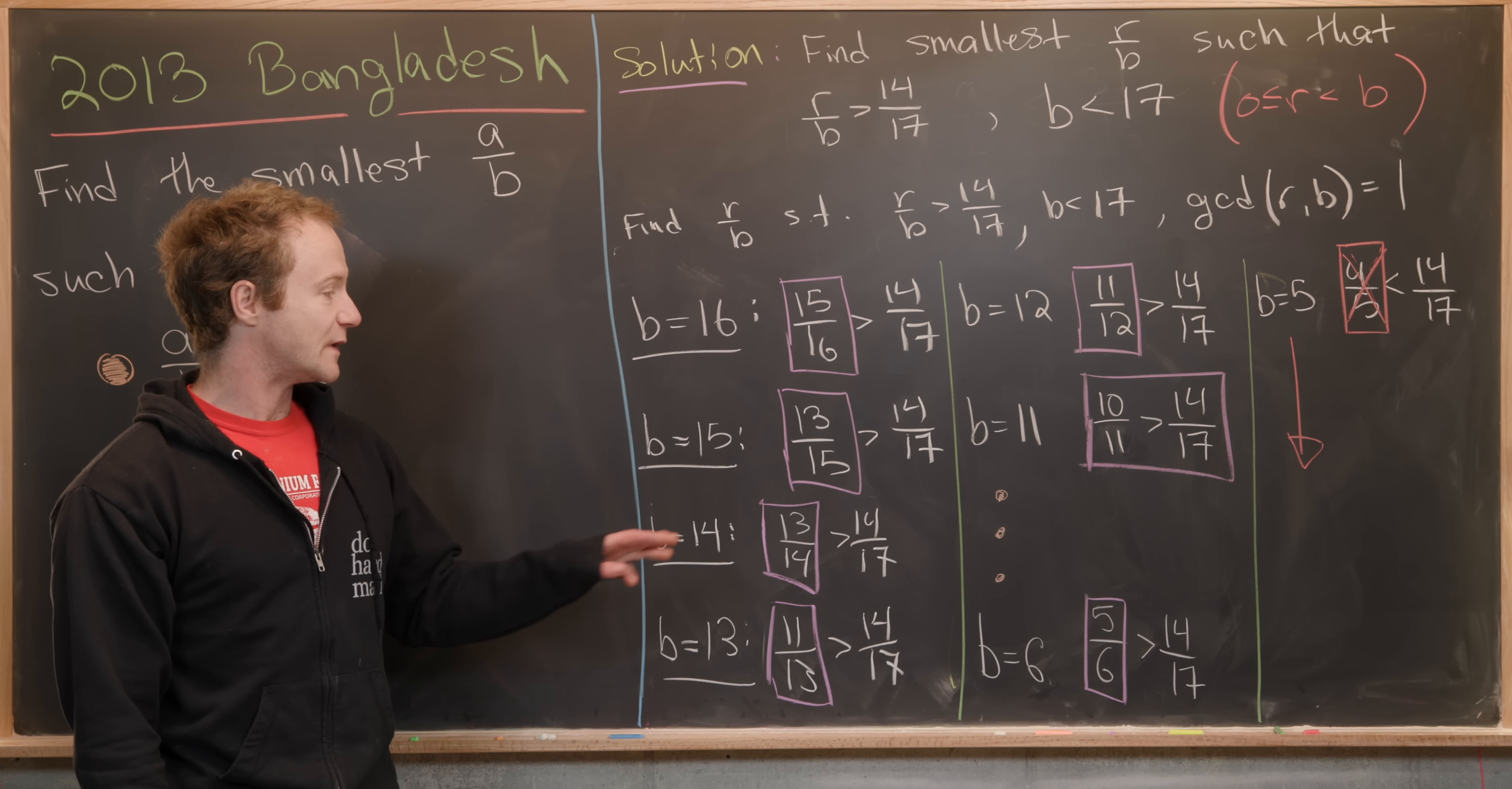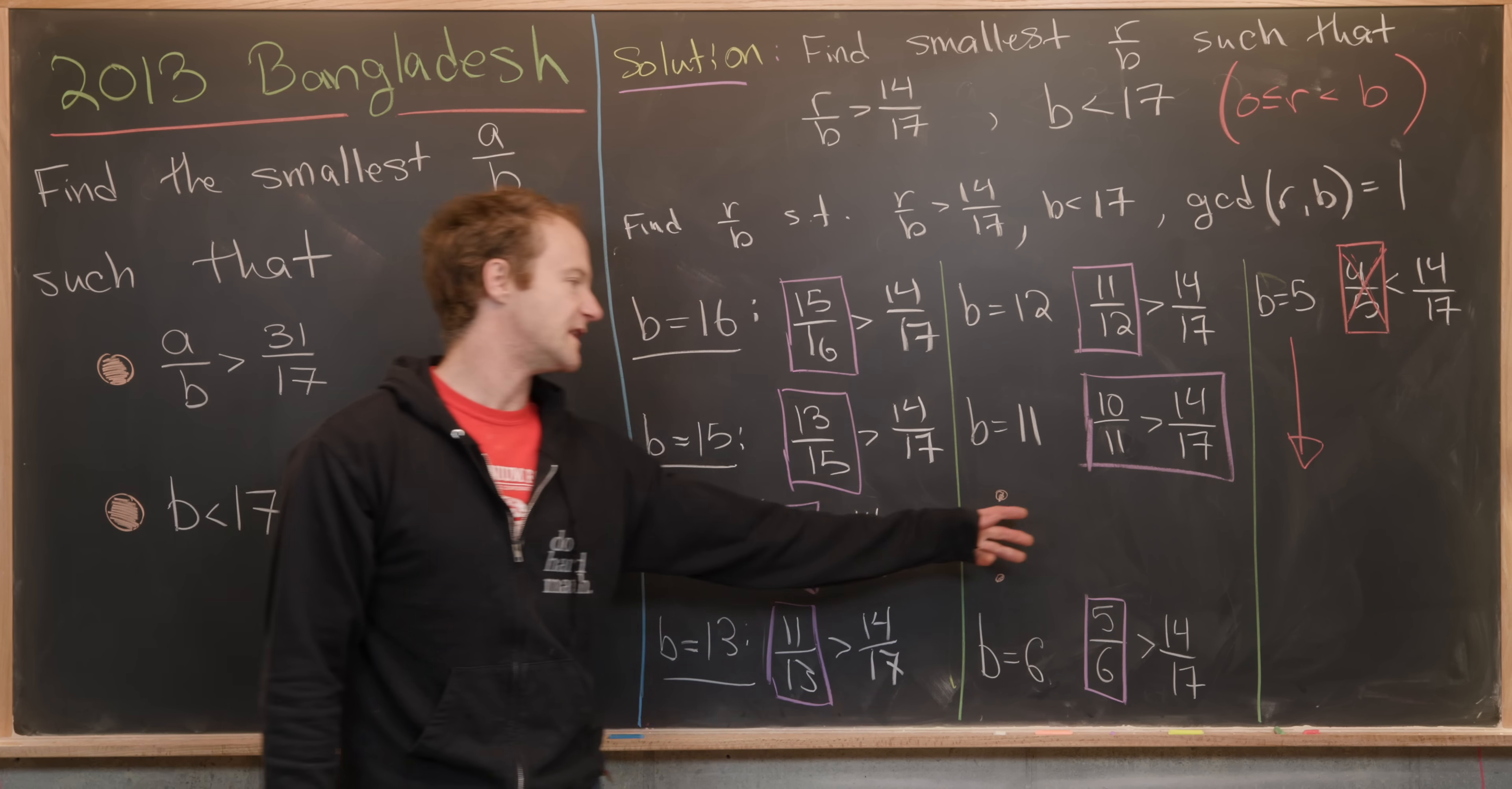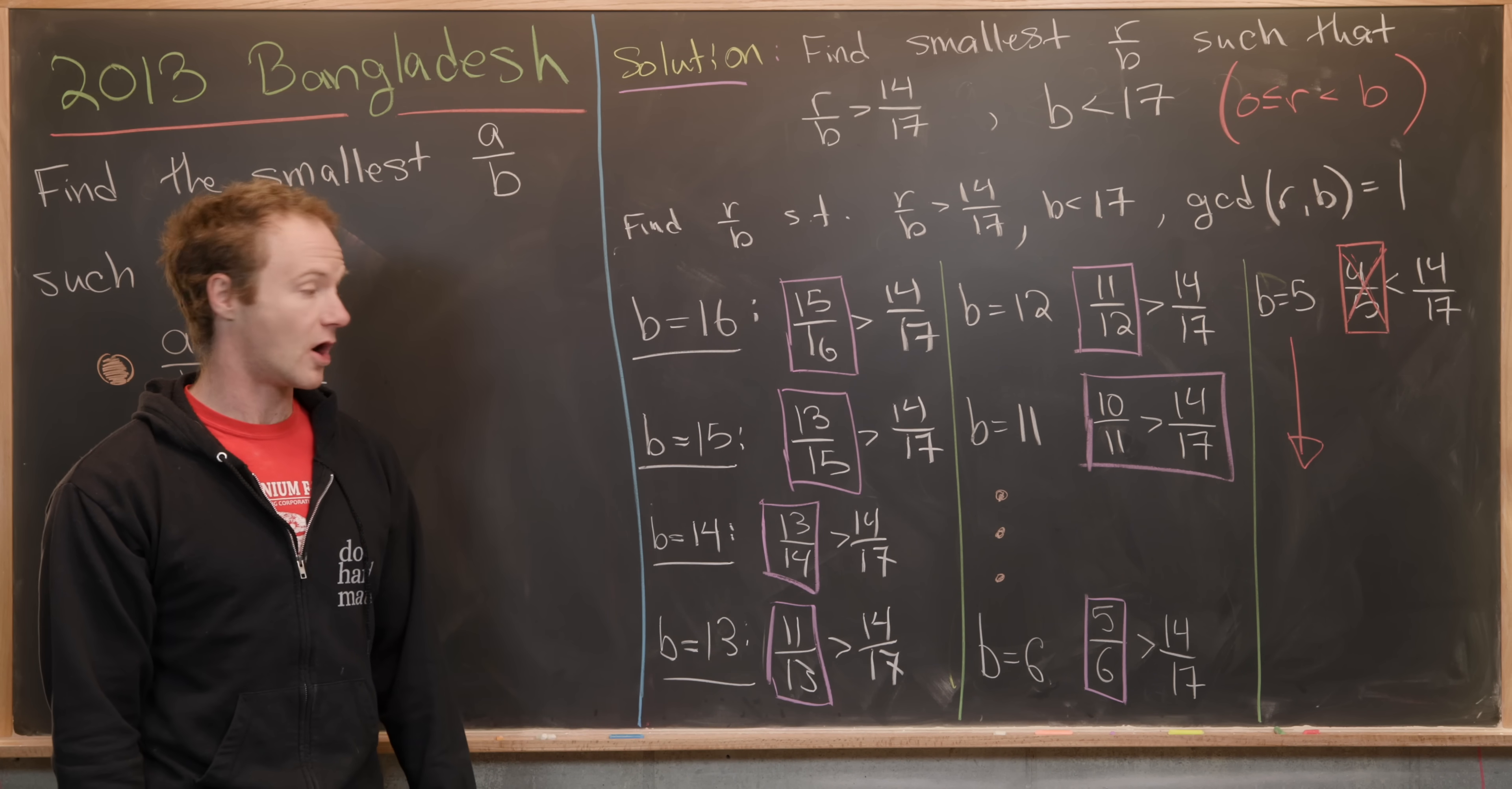Looking at this, we see that we need to find the minimum of all of the numbers in these purple boxes on the board, along with these that are kind of in the middle, but five over six is going to be clearly the minimum of all of those.